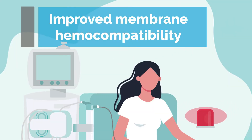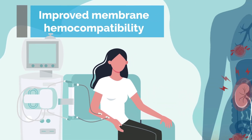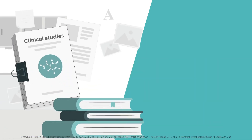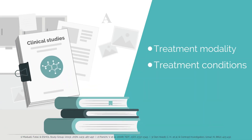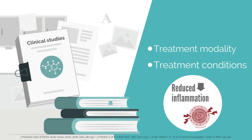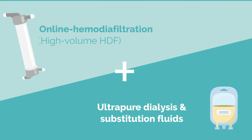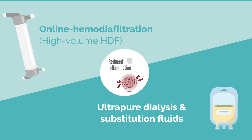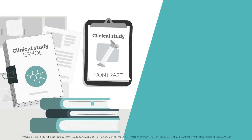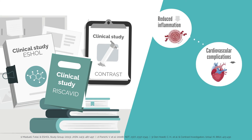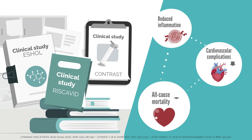Improved membrane hemocompatibility is just one approach to reduce the overall physiological burden of end-stage kidney disease patients. Several clinical studies have shown that the choice of treatment modality and conditions helps to reduce the inflammatory profile of patients. The combination of ultra-pure dialysis and substitution fluids with online hemodiafiltration, particularly high-volume HDF, was shown to reduce inflammation compared with standard hemodialysis. Large studies like Eschol, Contrast, and Riscovid confirm the reduced inflammation and the associated reduction in cardiovascular and all-cause mortality for these advanced convective therapies.